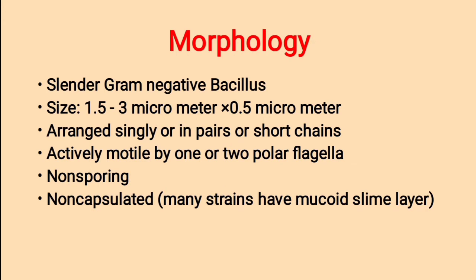Morphology. Pseudomonas aeruginosa is a slender gram-negative bacillus. Size is about 1.5–3 micrometers in length and 0.5 micrometers in breadth. They are arranged singly, in pairs, or in short chains. They are motile organisms by one or two polar flagella. They are non-sporing and non-capsulated organisms.